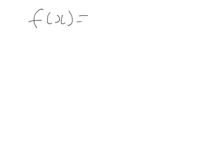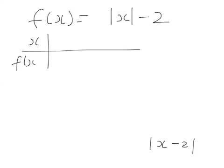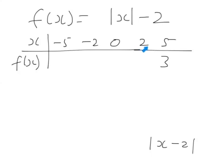Now we're going to take the function f(x) equals the modulus of x, minus 2 — that's not the same as mod(x minus 2); they're different. Let's take a few values: x equals minus 5, minus 2, 0, 2, 5. The modulus of 5 is 5, minus 2 is 3. The modulus of 2 is 2, minus 2 is 0. The modulus of 0 is 0, minus 2 is minus 2. The modulus of minus 2 is 2, minus 2 is 0. The modulus of minus 5 is 5, minus 2 is 3.